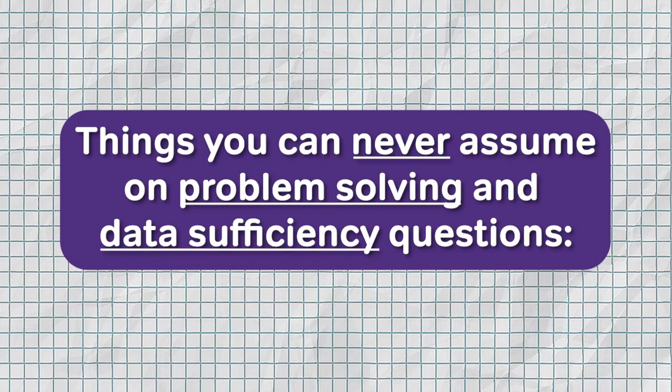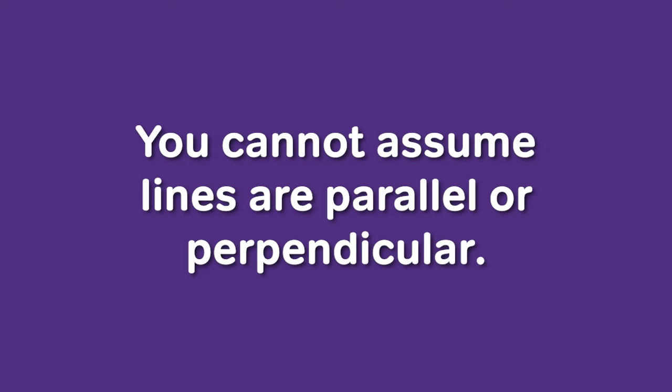Now let's bring both question types together and discuss things you can never assume on either problem solving or data sufficiency. You cannot assume that lines are parallel or perpendicular even if they look like they are. The only way to assume lines are parallel is if you see the symbol for parallel lines or are told the lines are parallel in the question. Similarly, the symbol for perpendicular lines looks like an upside-down T, or you may see a square in the corner of an angle. If you see either of those indicators, you can then apply geometric theorems for parallel or perpendicular lines.